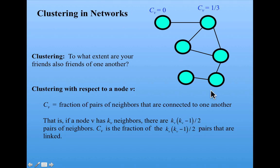But only one of its pairs of neighbors is linked. That is, it's missing links between this pair of neighbors and this pair of neighbors. So only one out of the three possible pairs are linked. So its clustering is one third.